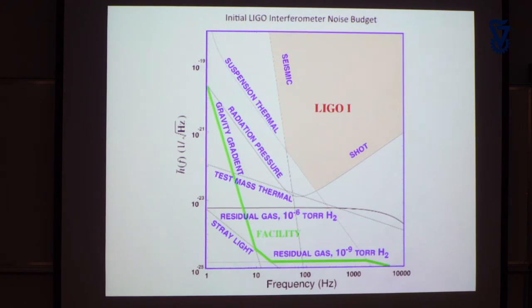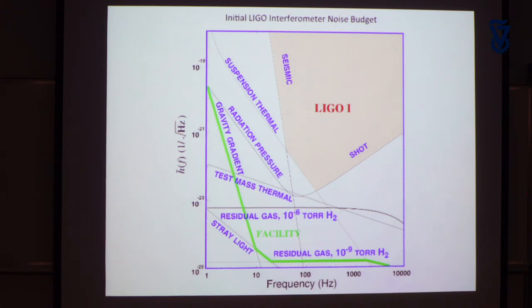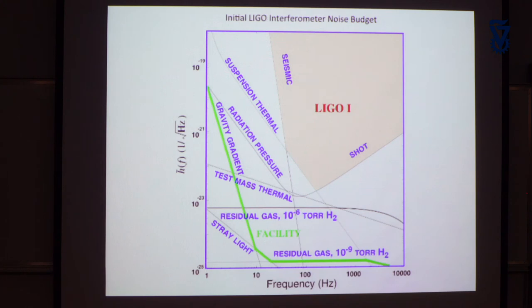Those density fluctuations move along at the velocity of sound in the ground. If you have a mirror here and a sound wave compresses the ground, that compression pulls on the mirror by plain old Newtonian gravity — and that's something you can't shield against. That's gravity gradient noise. Then there are other noise sources that are basically a matter of money — for example, making sure the vacuum is good enough.